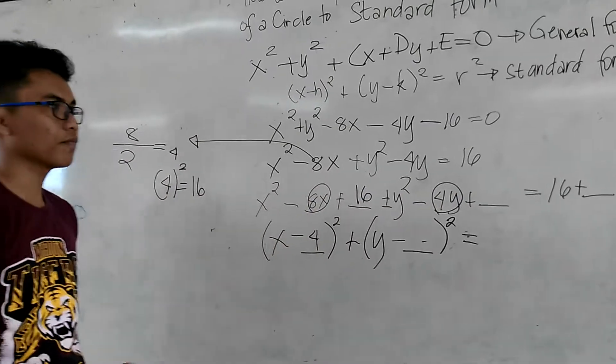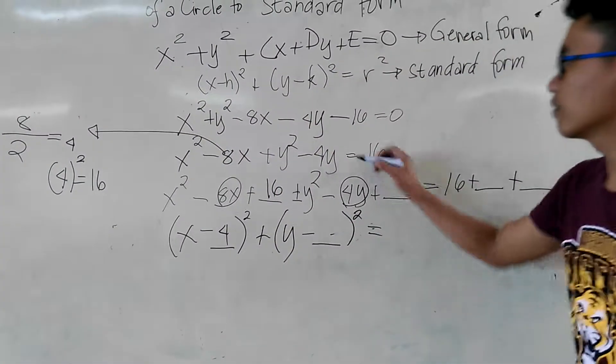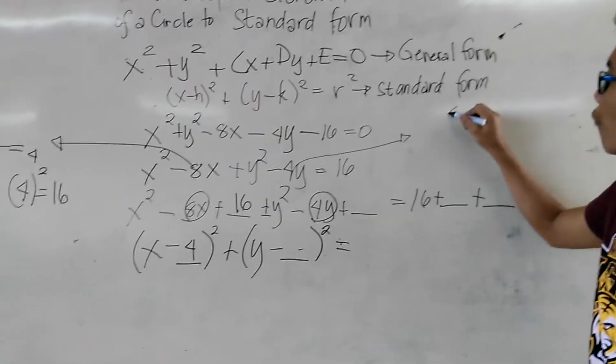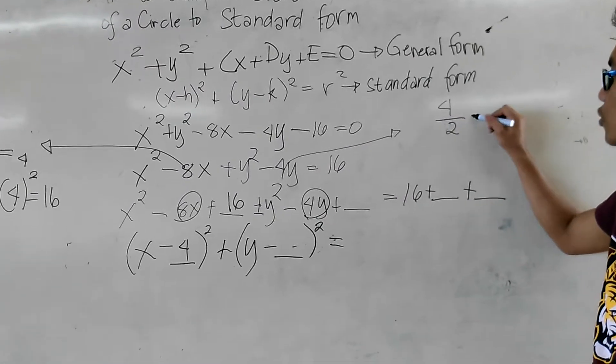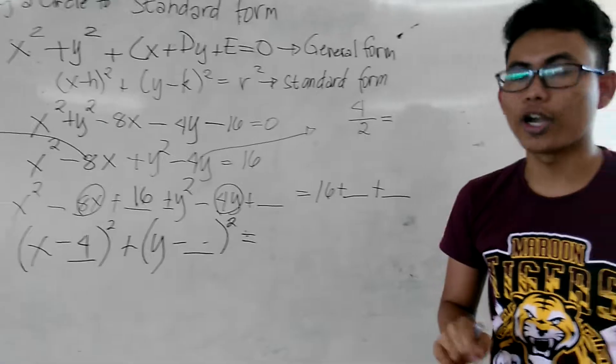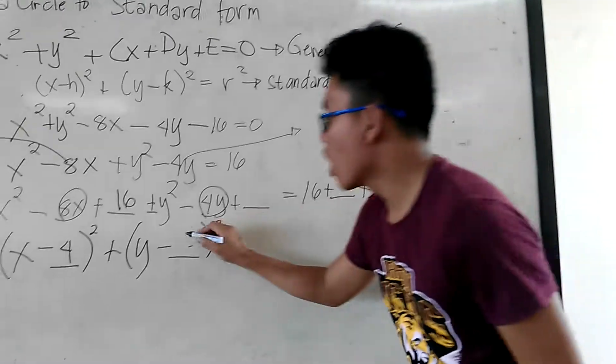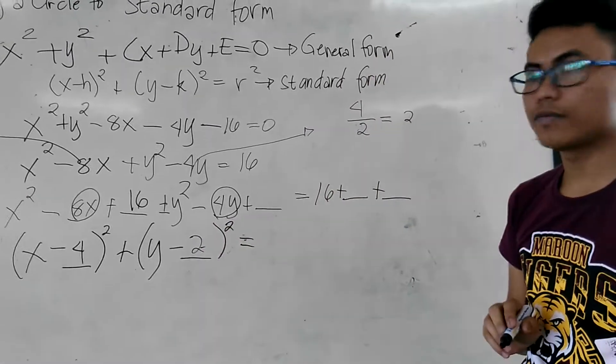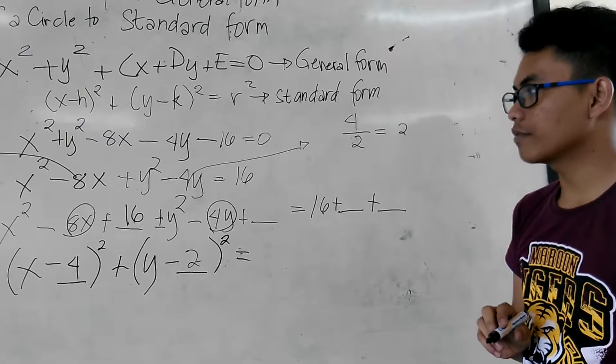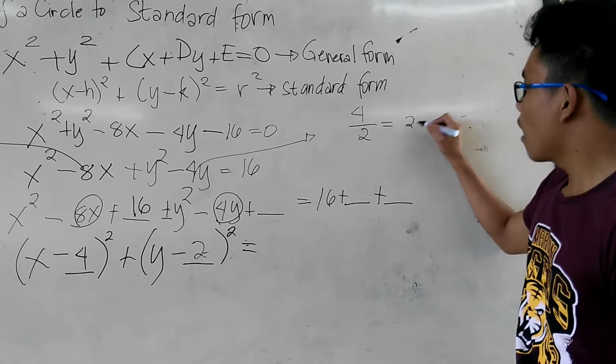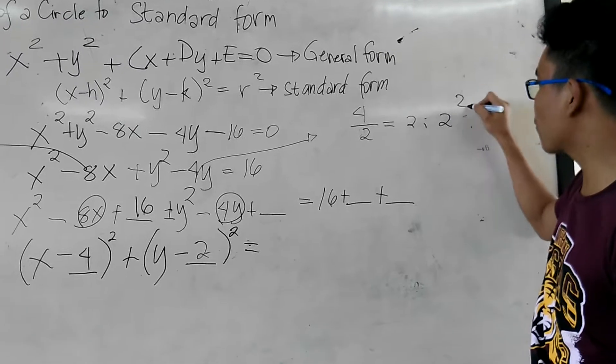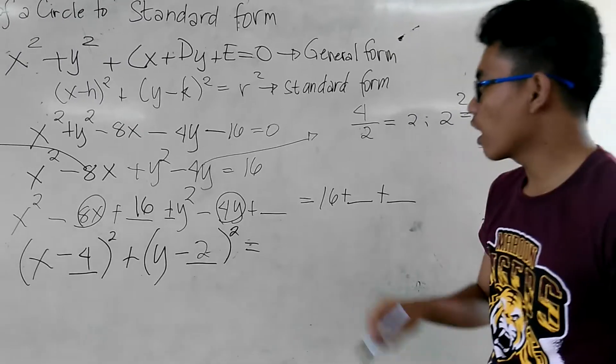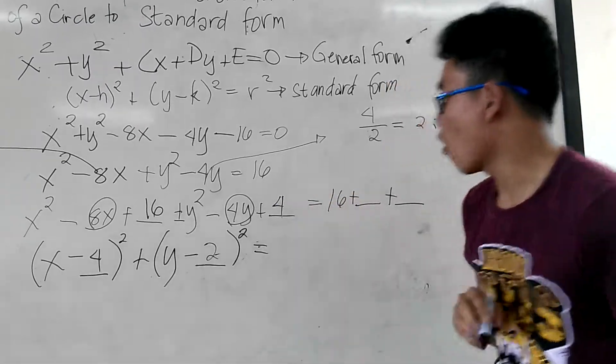So, we have 4y na naman. 4 divided by 2. Or half of 4 is 2. Kaya, 2 rin dito. Okay? Then, pagkatapos rin, 2 squared is equal to 4. Kaya, 4 din dito. Okay?